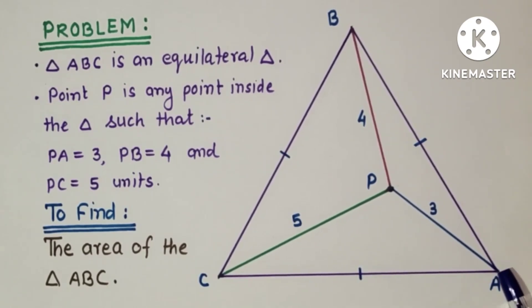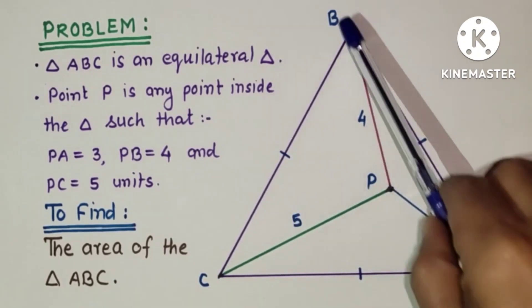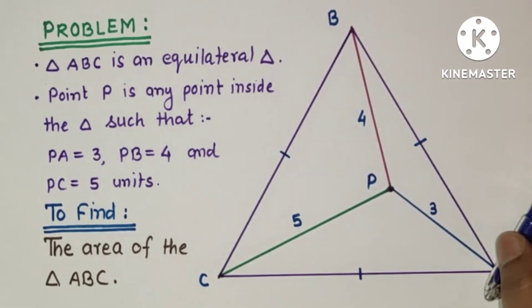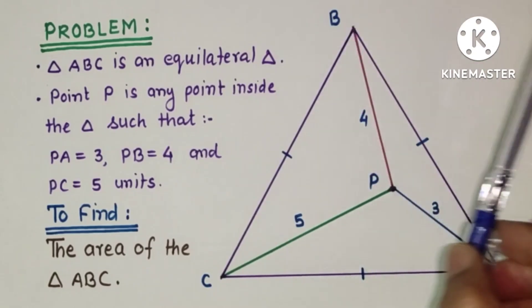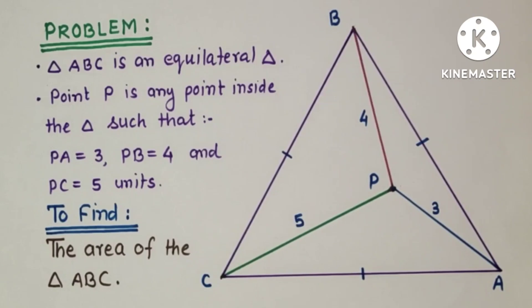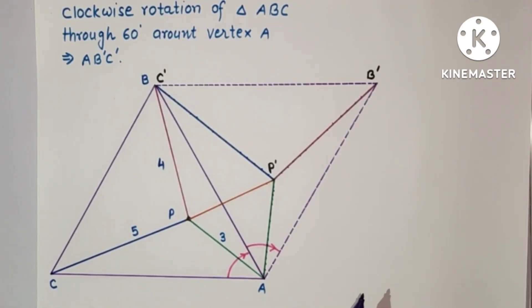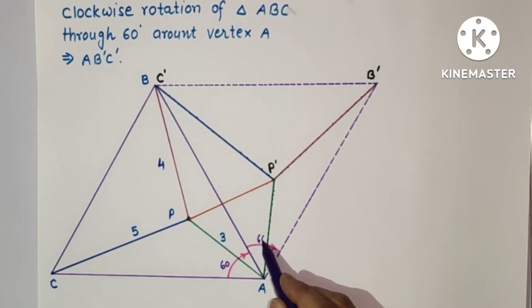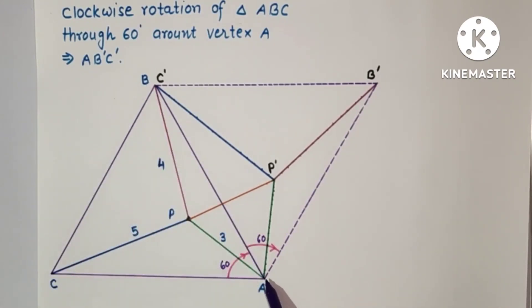We rotate the triangle about vertex A clockwise through 60 degrees. Then AC will become AC dash and AB will become AB dash, and B will become B dash, so it will form a rhombus. After rotation, the diagram shows triangle ABC rotated clockwise through 60 degrees around vertex A — AC becomes AC dash and AB becomes AB dash.